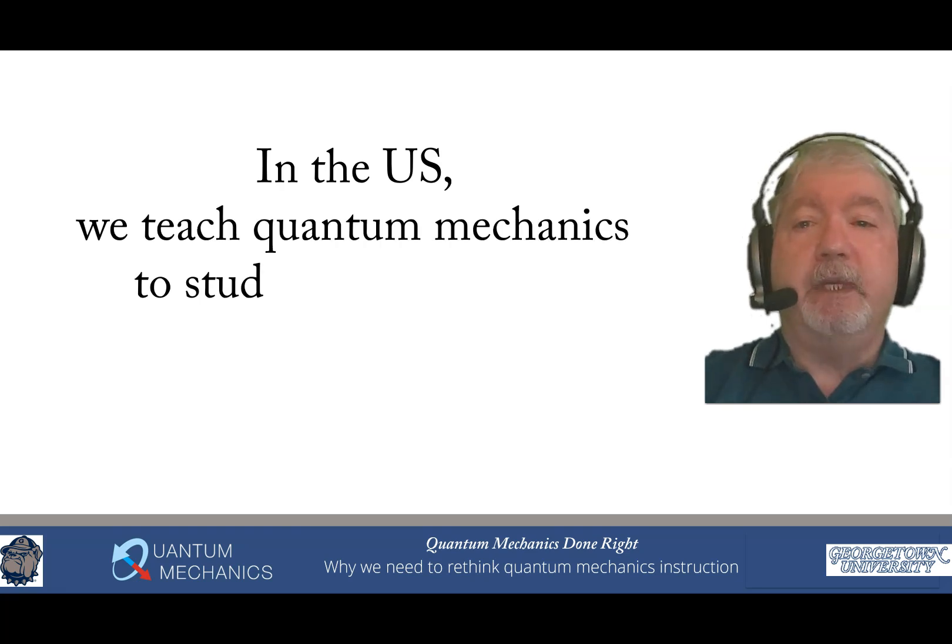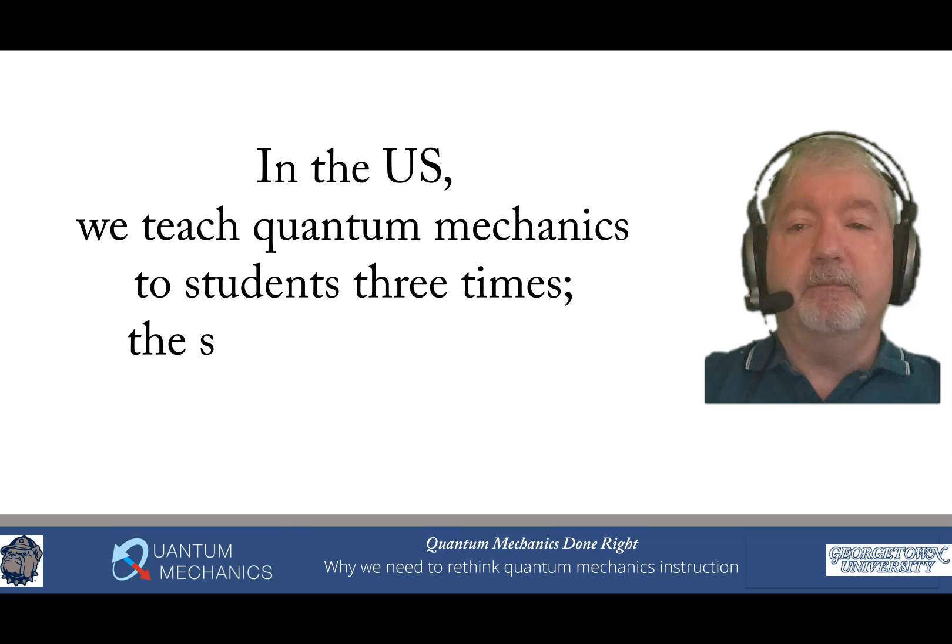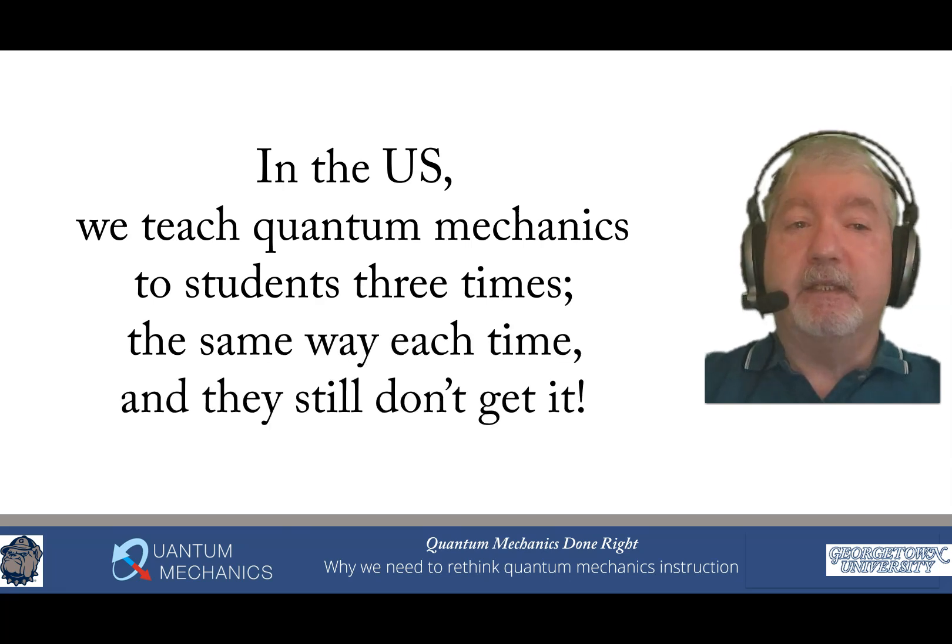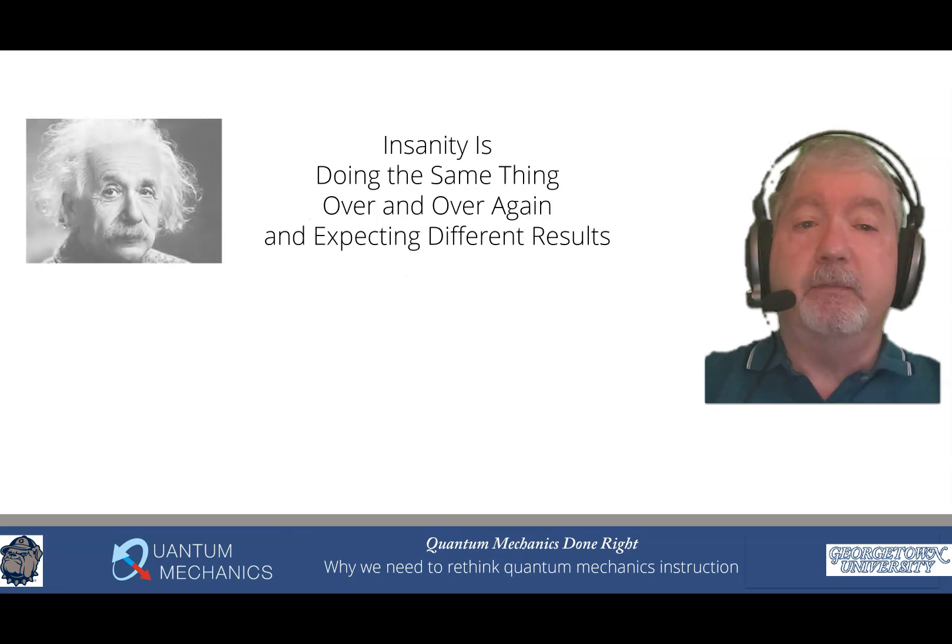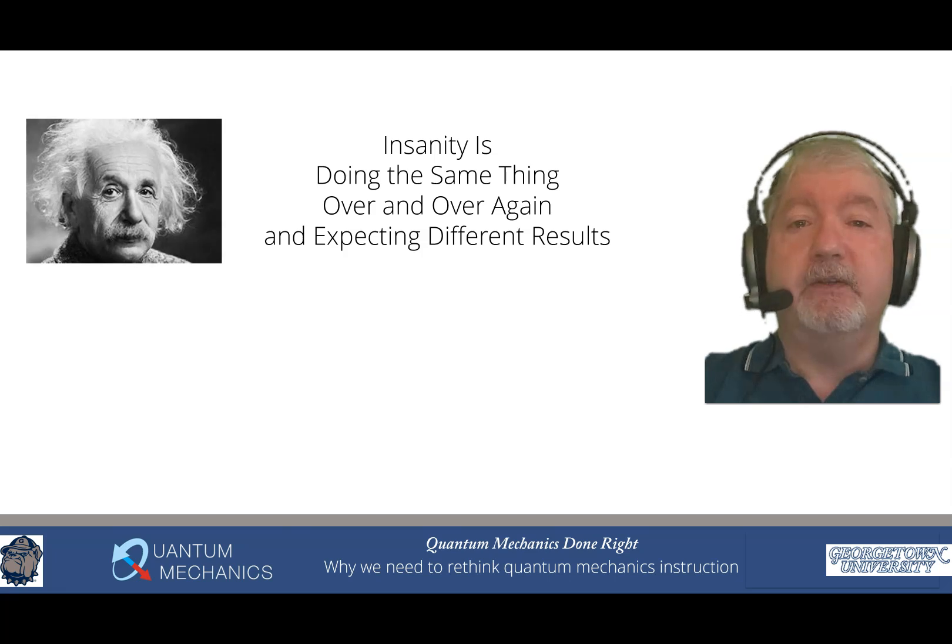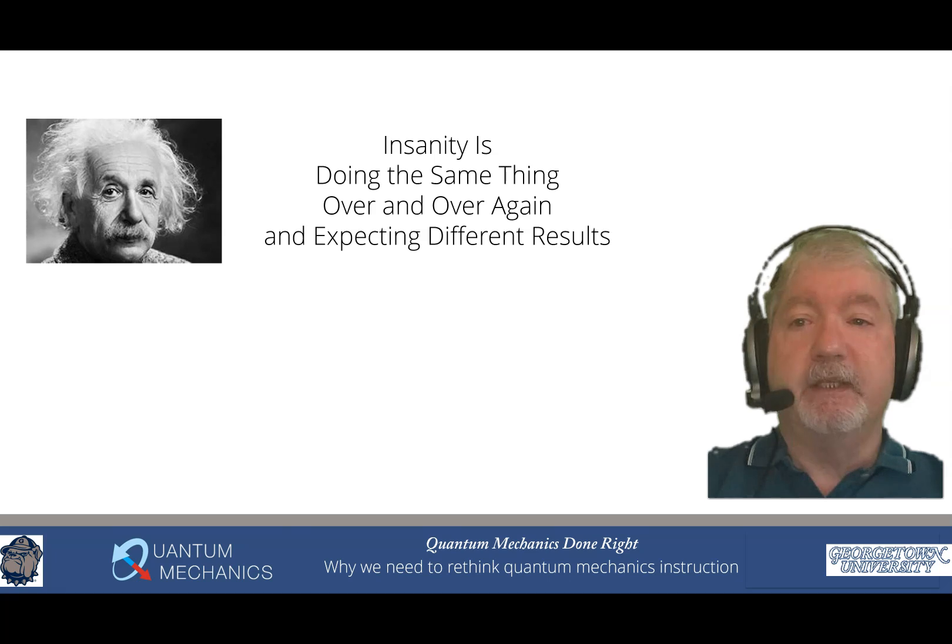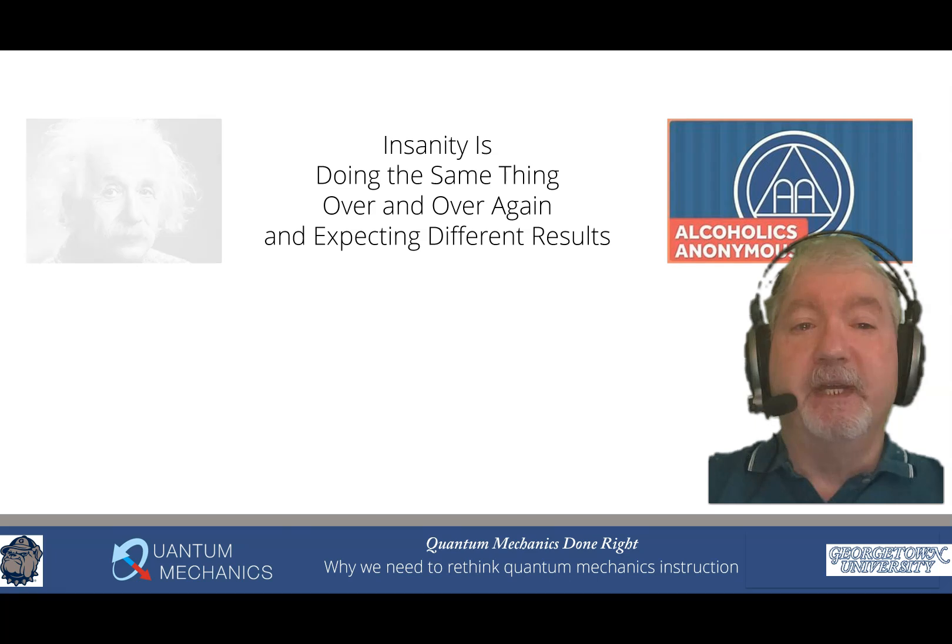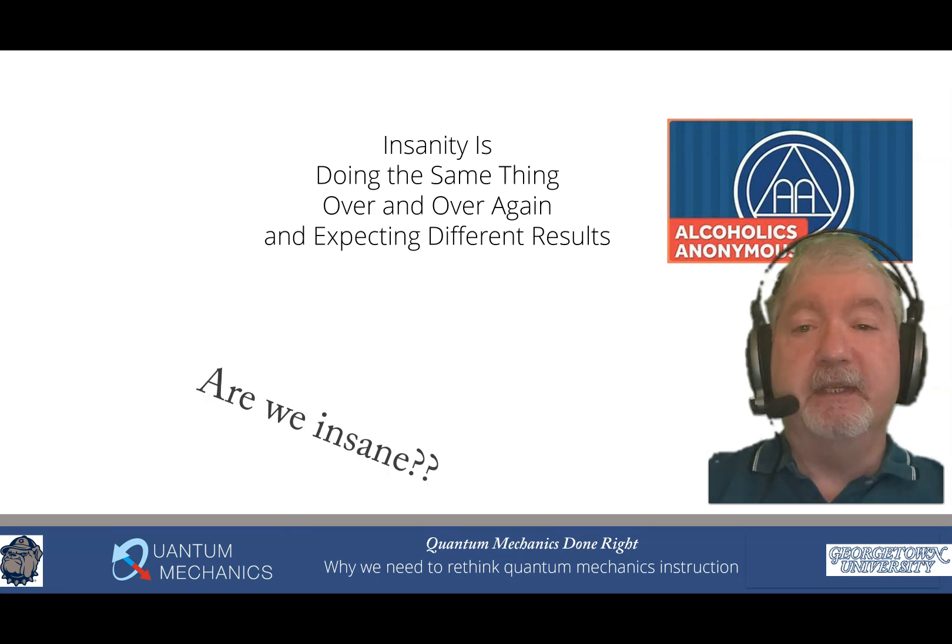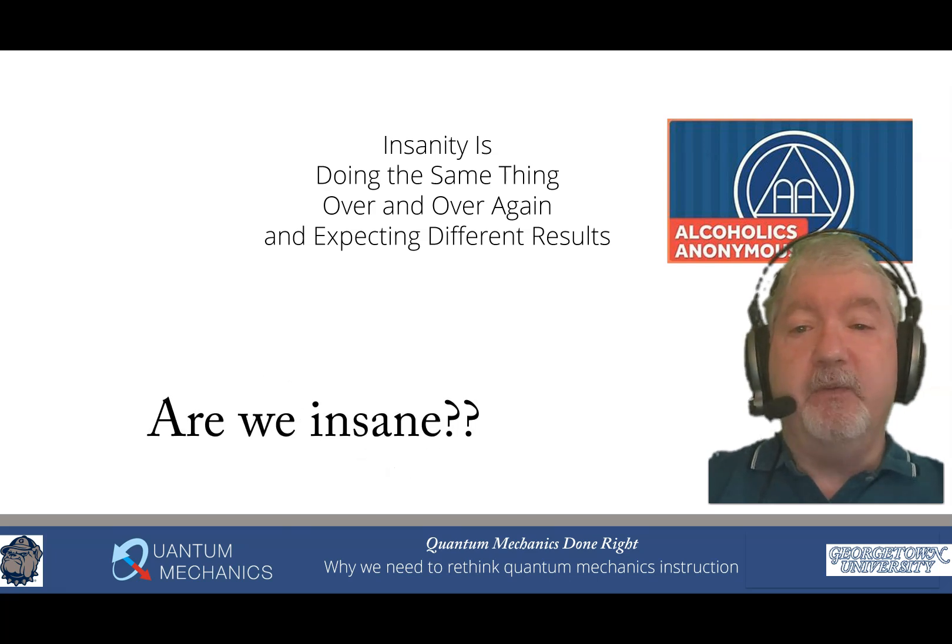Now in the United States, we teach quantum mechanics to students three times. We teach it the same way each time and they still don't get it. There's a famous saying attributed to Einstein that insanity is doing the same thing over and over again and expecting different results. Now, in reality, this doesn't come from Einstein. It comes from Alcoholics Anonymous brochures from the mid 1980s. Yet the sentiment is still the same. It asks the question, are we insane?